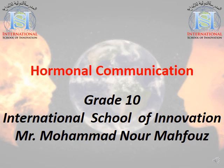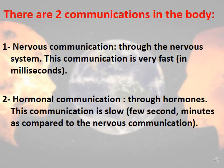Hello grade 10 students. In this video we're going to talk about hormonal communication in our body. We have two types of communication. The first is called nervous communication, which occurs through the nervous system and is very fast, occurring in milliseconds. The second type is called hormonal communication, which occurs through hormones. Compared to nervous communication, it is slow, occurring in a few seconds or even a few minutes.